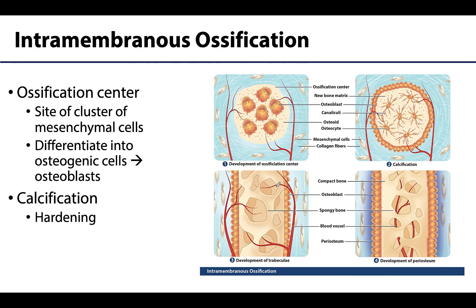Let's explore the big picture ideas regarding the process of intramembranous ossification. The first part to understand is the concept referred to as an ossification center. Ossification centers are areas where cells begin to cluster together, which will eventually become areas that will develop into bone. Those cells will eventually differentiate into osteoblasts that will secrete extracellular matrix components of bone. In the case of intramembranous ossification, first those mesenchymal cells will cluster together, then differentiate into osteogenic cells, and then change into osteoblasts. After this occurs and osteoblasts are hard at work, calcification or hardening of the extracellular matrix can occur.